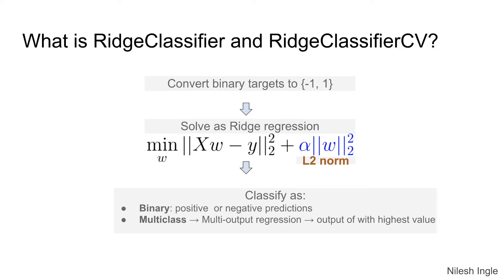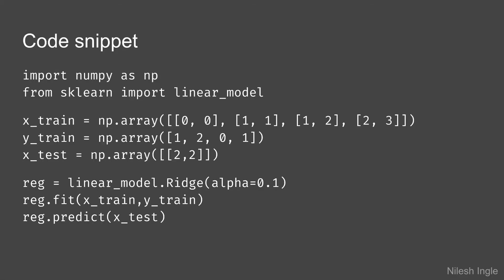So the general format for implementation is we import the libraries, we have this data set, we train and test. And for the model we initialize it in this variable reg = linear_model.Ridge and we set a value of alpha. And then that is fit on the train set here x_train and y_train, and then that is used to predict - the model reg is used to predict based on the test data x_test.